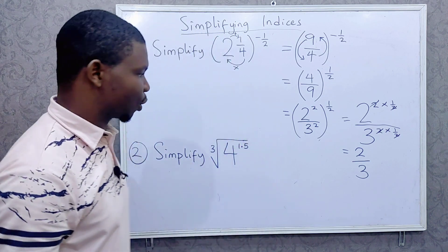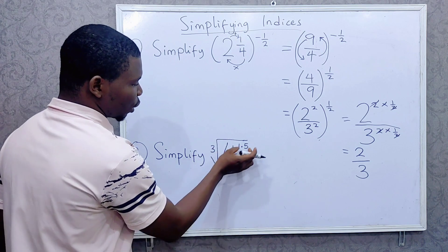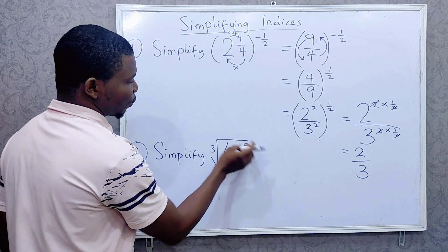Now let's do the next one. Simplify the cube root of 4 raised to power 1.5.